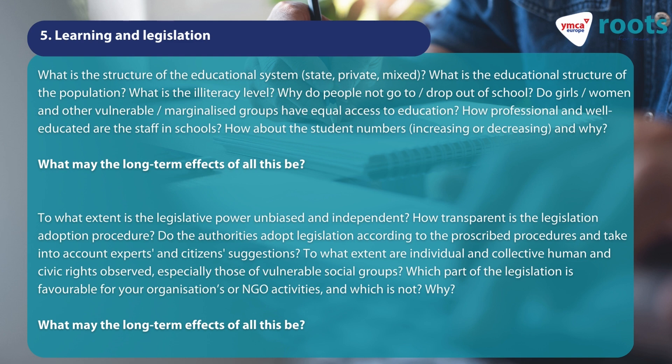To what extent is the legislative power unbiased and independent? How transparent is the legislation adoption procedure? Do the authorities adopt legislation according to the prescribed procedures and take into account experts' and citizens' suggestions? To what extent are individual and collective human and civic rights observed, especially those of vulnerable social groups? Which part of the legislation is favourable for your organisation's or NGO activities, and which is not, and why? What may the long-term effects of all this be?